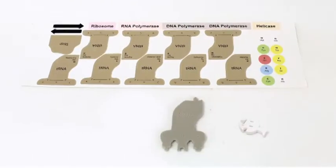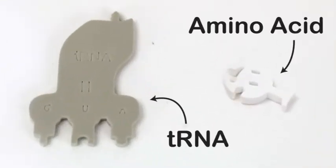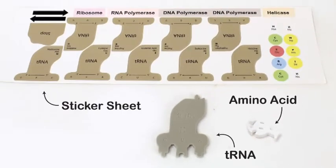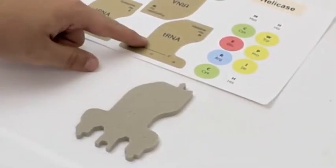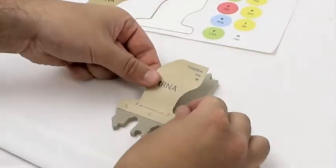To begin with, each of the amino acids as well as the tRNA pieces will need a sticker. Use the imprinted information on the foam piece to determine which sticker goes with which piece.